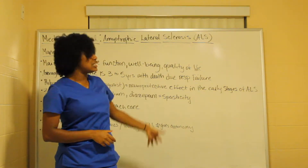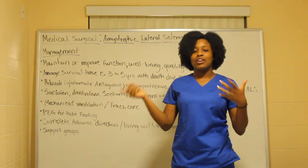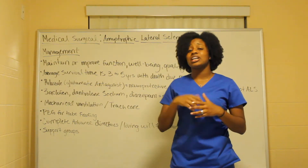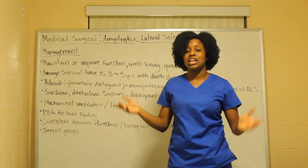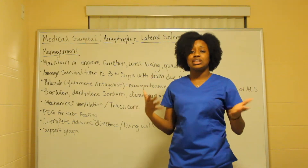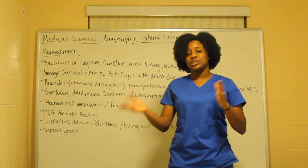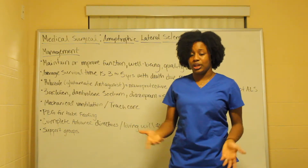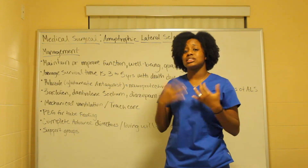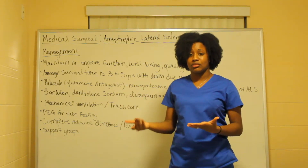ALS is almost like a death sentence. You may remember the TV show Empire where Lucius Lyon was thought to have ALS and was planning his estate because he expected to live only three to five years — though he ended up having Myasthenia Gravis. That can help you remember that ALS is the worst of these conditions due to that three-to-five-year life expectancy after diagnosis.